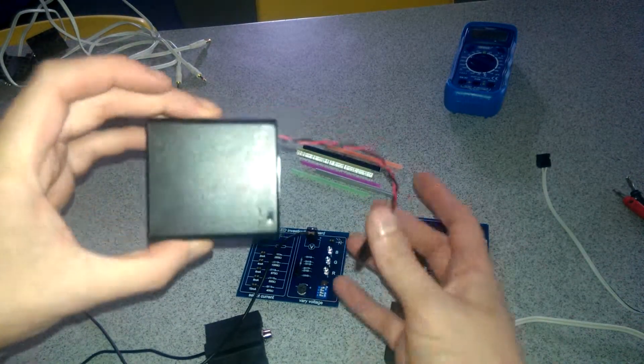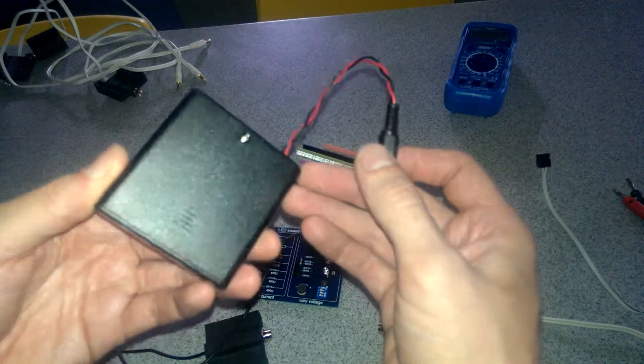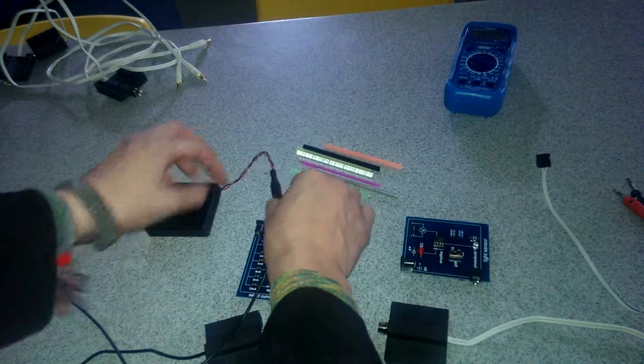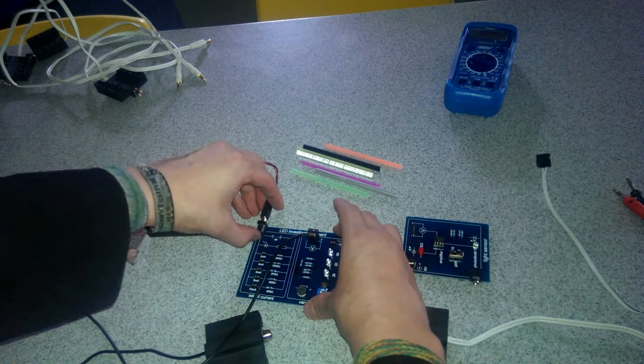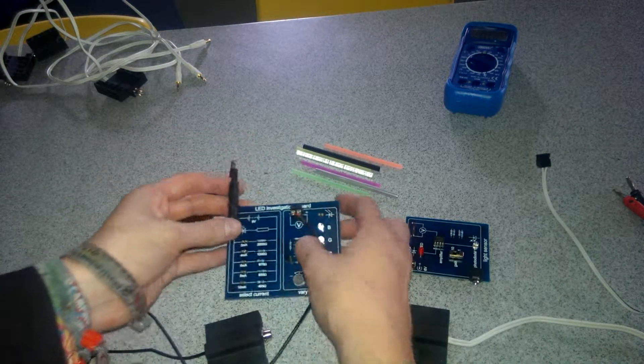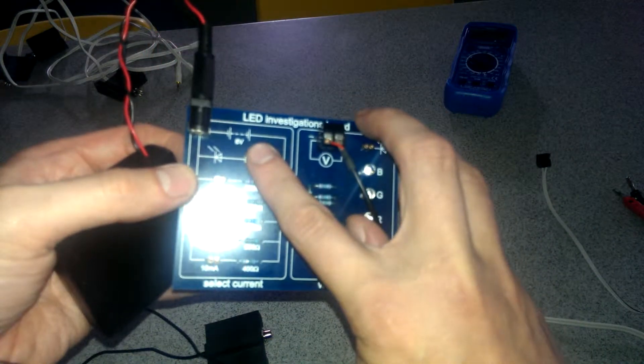The second thing we need is the battery pack. That looks like this and it contains four AA batteries inside here. It has a switch, it should be set to off, please leave it off until you need it. Once you've got it you can plug it into the top left hand corner of the LED investigations board here where it says six volts.